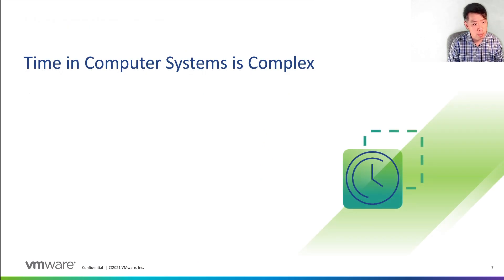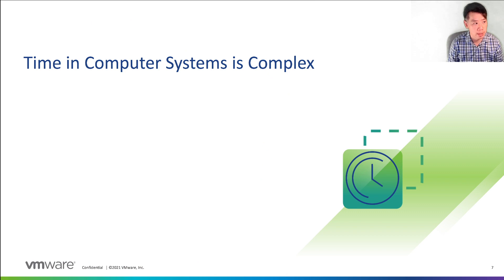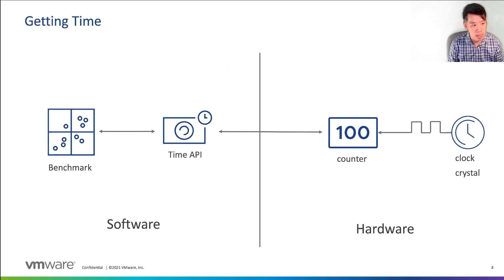Calibrating clocks in computer systems isn't so simple because measuring time in computer systems is actually quite complex. To understand this, let's first understand how time is derived in a computer system at a high level. Usually, applications like a benchmark make calls into a timing API to read the time of a counter in hardware, which represents real time. That counter gets incremented by a clock crystal at regular intervals, known as the clock frequency.